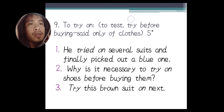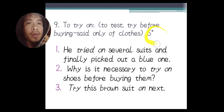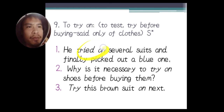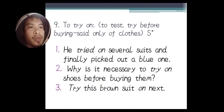Number nine: 'to try on,' meaning to test or to try before buying, used only for clothes. The idiom is separable — we can insert an object between the parts. Example one: He tried on several suits and finally picked out a blue one. Example two: Why is it necessary to try on shoes before buying them? Example three: Try this brown suit on — 'this brown suit' is inserted between 'try' and 'on.'